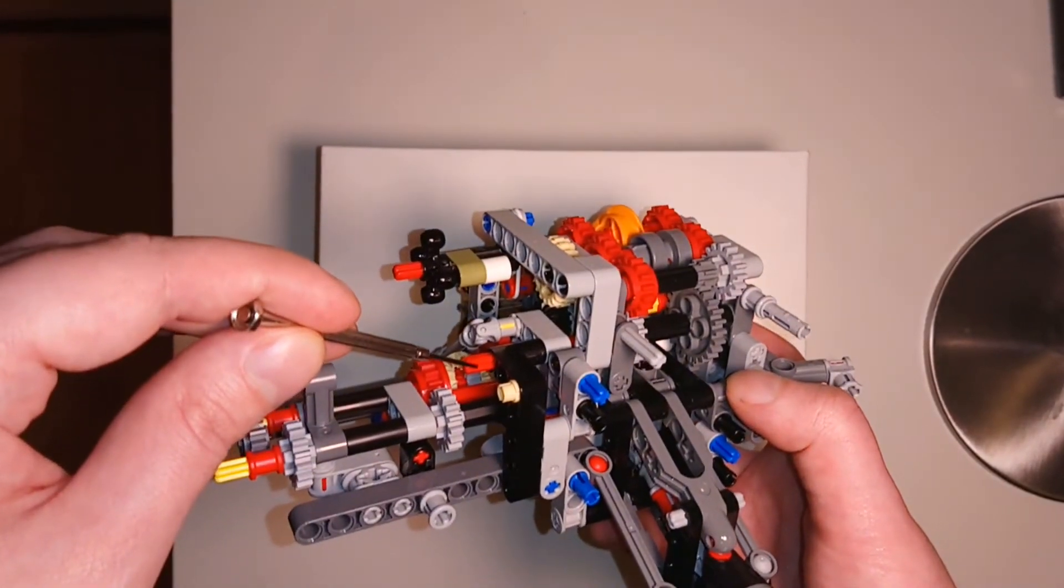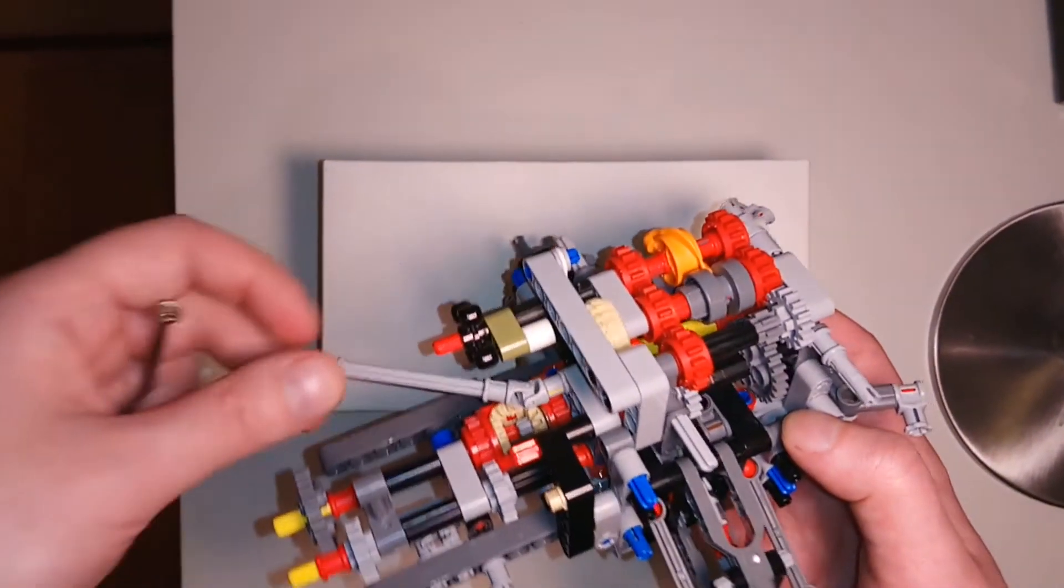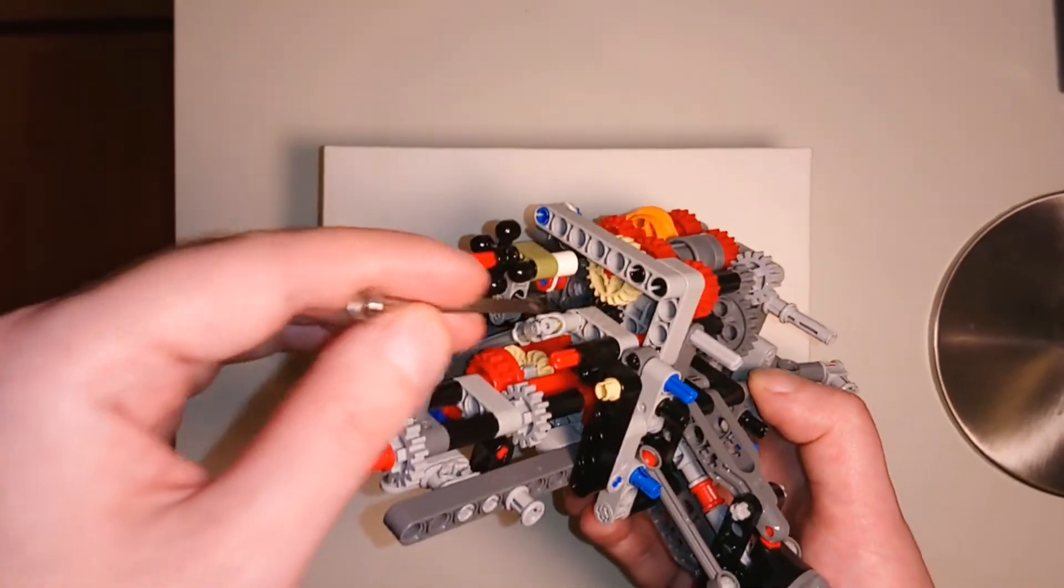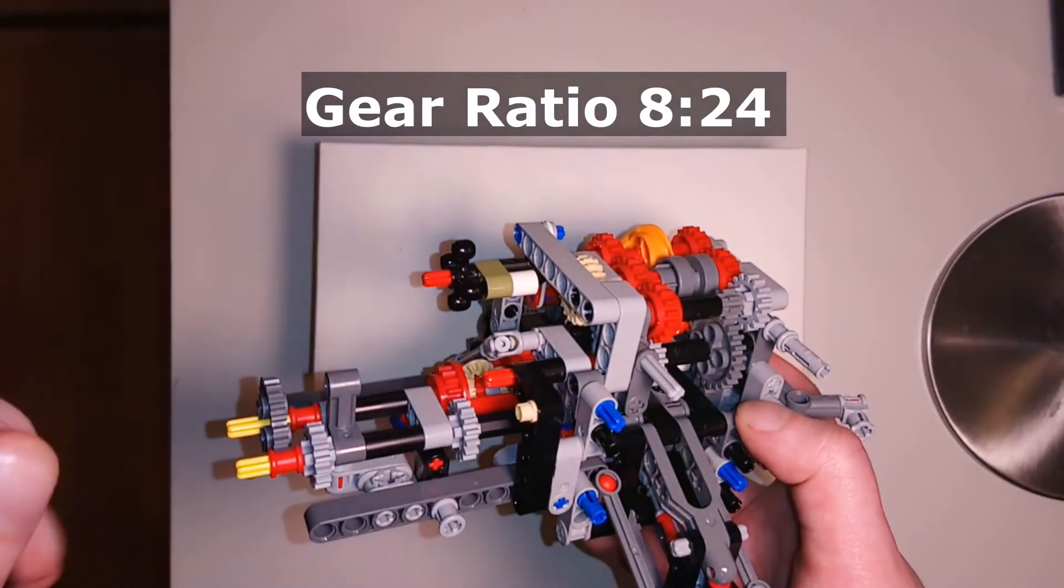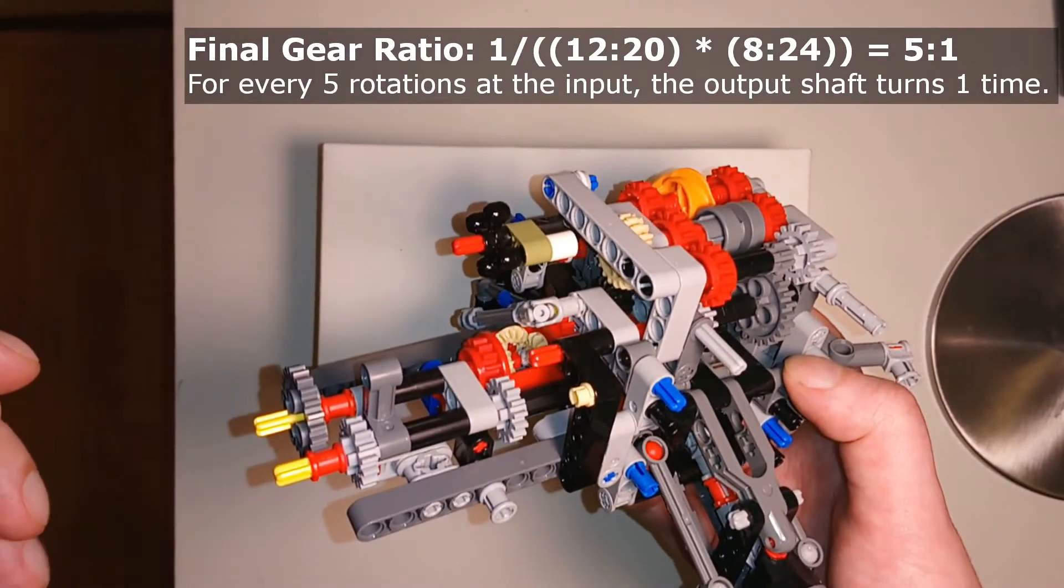Finally, it exits from the output shaft. Because there are two transitions from a small gear wheel to a larger gear wheel, namely here and here, the speed of the rotations is greatly reduced, but the torque is increased.